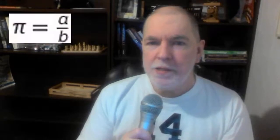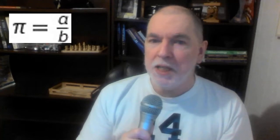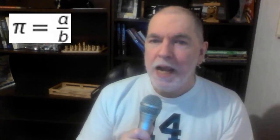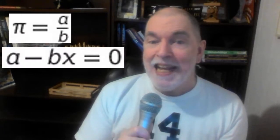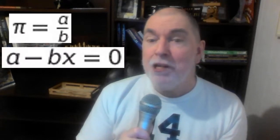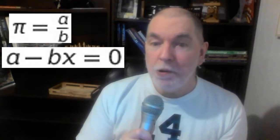A simple proof that pi is irrational. Begin by assuming just the opposite — that pi is rational and can be expressed as a ratio of two positive integers a and b. That's the same thing as saying that pi is a solution to this linear equation with integer coefficients.